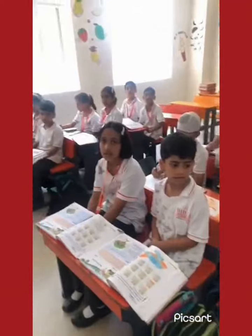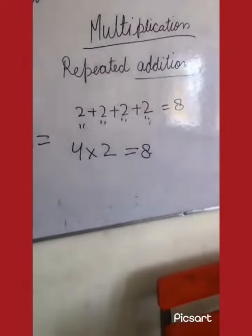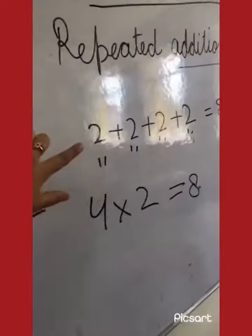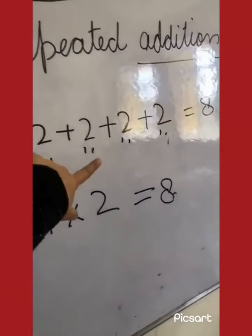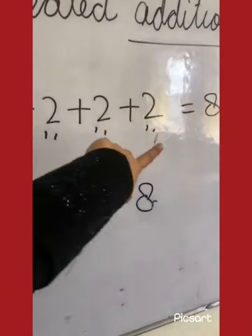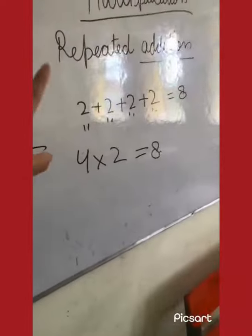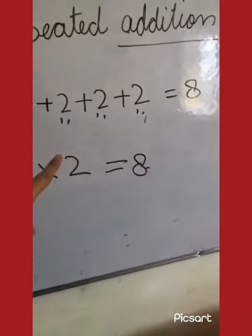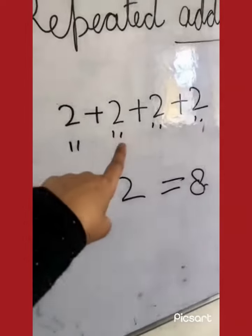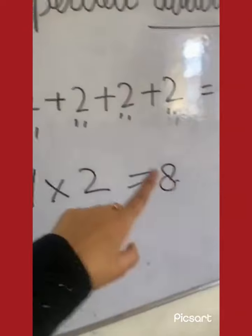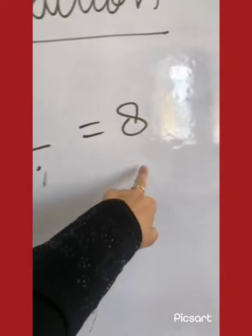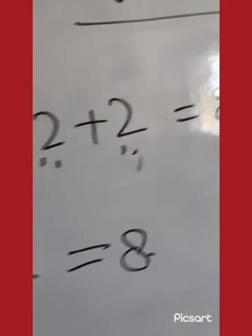Can you see on the board what we have written? We have written 2 plus 2 plus 2 plus 2. That means we are adding the same number repeatedly — 2 plus 2 plus 2 plus 2 is equal to 8.